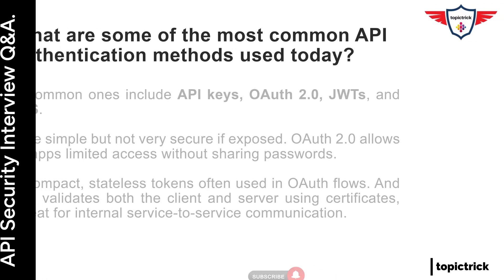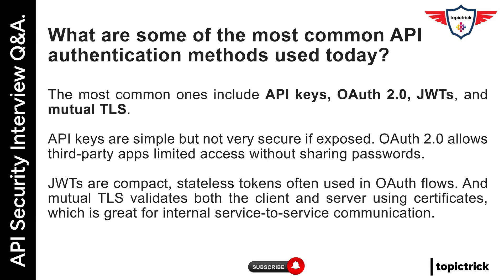What are some of the most common API authentication methods used today? The most common ones include API keys, OAuth 2.0, JWTs, and Mutual TLS. API keys are simple but not very secure if exposed. OAuth 2.0 allows third-party apps limited access without sharing passwords. JWTs are compact, stateless tokens often used in OAuth flows. And Mutual TLS validates both the client and server using certificates, which is great for internal service-to-service communication.